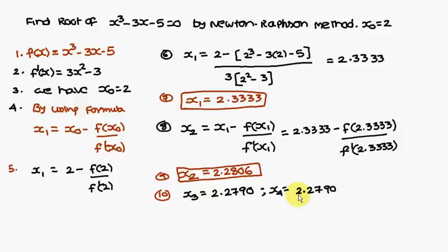these two values are nearly the same. Therefore, the root of the equation is 2.2790. This is the approximate root, and this is how to find the root of an equation using Newton-Raphson method. Thank you.